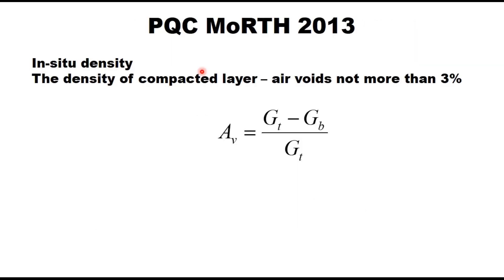The quality control criteria for PQC as per MORTH 2013 specification is slightly different. For in-situ density, the density of the compacted layer should be such that air voids are not more than 3%. To calculate air voids, the theoretical maximum dry density of the concrete is calculated using specific gravity of the mix constituents, along with the average density of three measurements from cores of 150 mm diameter. If Gt is the theoretical maximum specific gravity and Gb is the bulk specific gravity of the cube or core, then air voids are calculated using the specified equation, and the air voids should not exceed 3%.